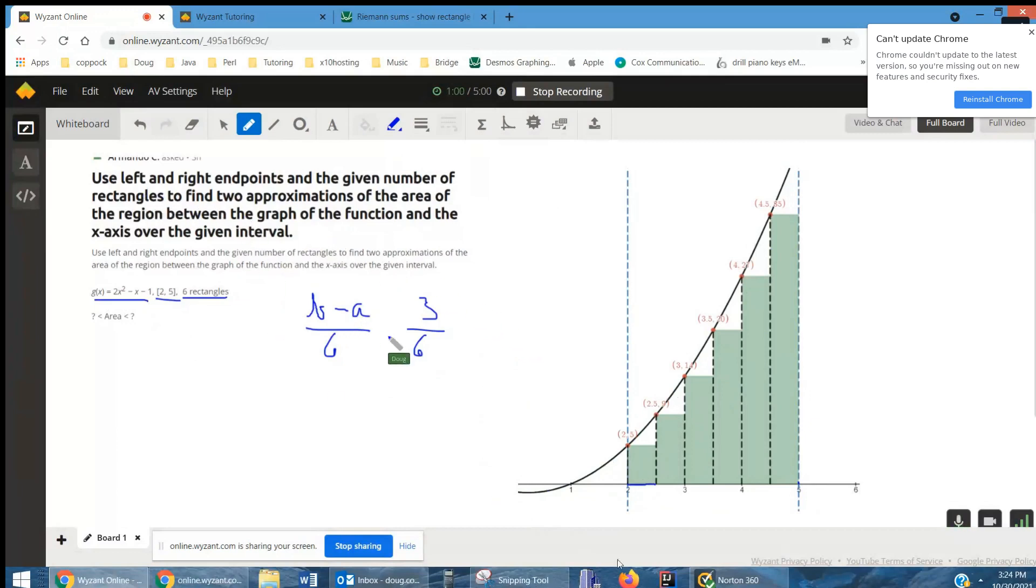If we're going to use left-hand endpoints, we want to start here at the A, find f of A, which will give us the height of this rectangle, and then multiply by the width, and that will give us the area of rectangle number 1. And we do the same thing for the remaining rectangles, 6 in all.